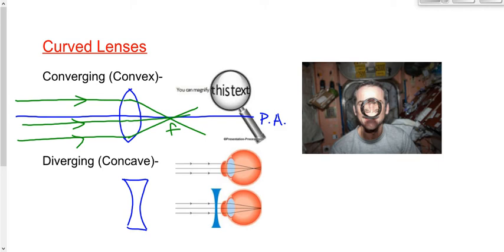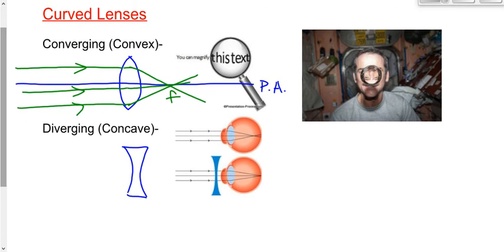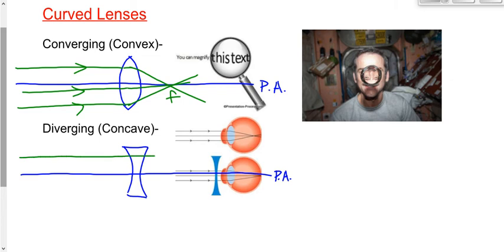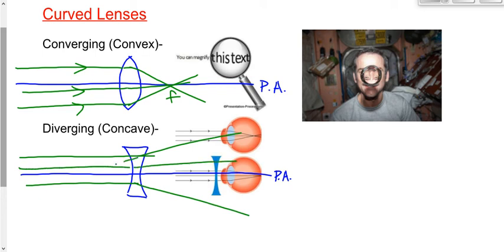It's a converging lens because all rays of light converge at that focal point. Why? Because the lens is shaped such that Snell's law guides them in that direction — a very specific shape. A diverging lens is called diverging because all rays of light parallel to the principal axis don't converge at a focal point. Rather, they diverge away from a certain spot. If extended backwards, they diverge away from what we call the focal point.